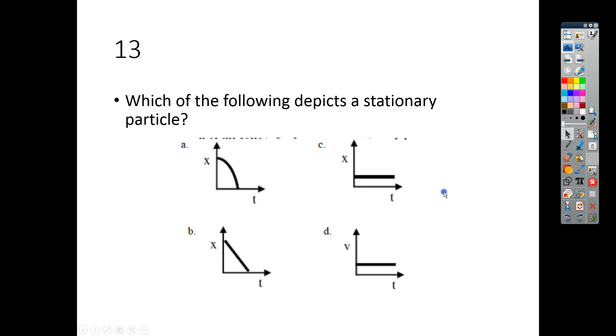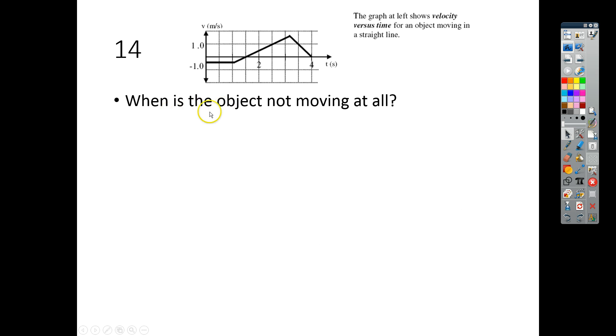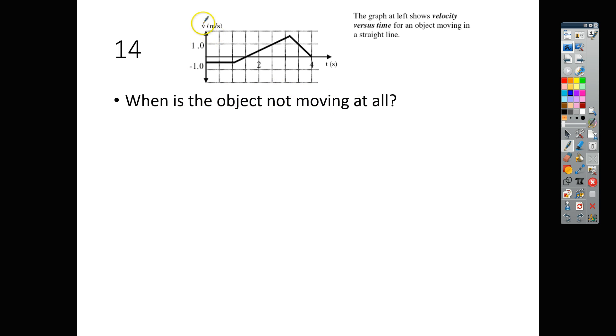For number 14, it says, when is the object not moving at all? We're looking for, this is a velocity versus time graph, we're looking for when the velocity is 0. So one of those times would be right here. That would be at 1½ seconds. And the other time would be at 4 seconds.